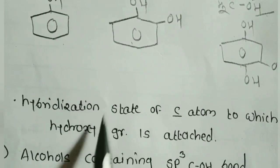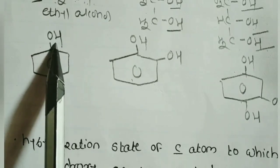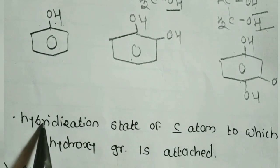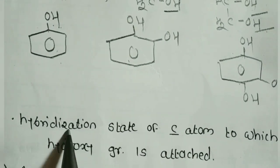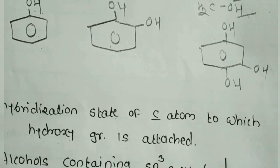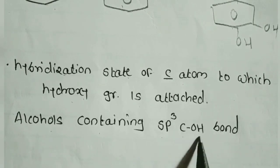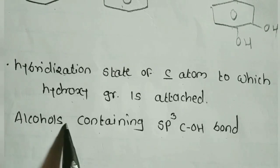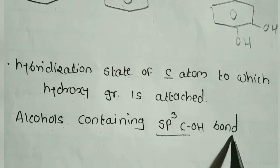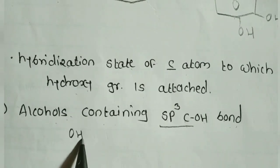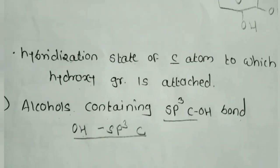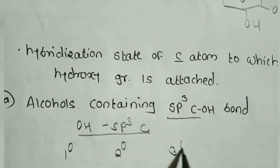This monohydric alcohol — with one OH group attached to either an alkyl or aryl group — can be further classified on the basis of the hybridization state of the carbon atom attached to the hydroxy group. Alcohol containing an SP3 carbon–OH bond is further classified into primary alcohol, secondary alcohol, and tertiary alcohol.